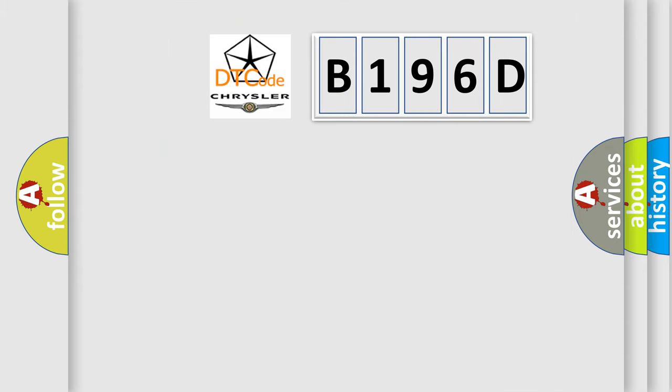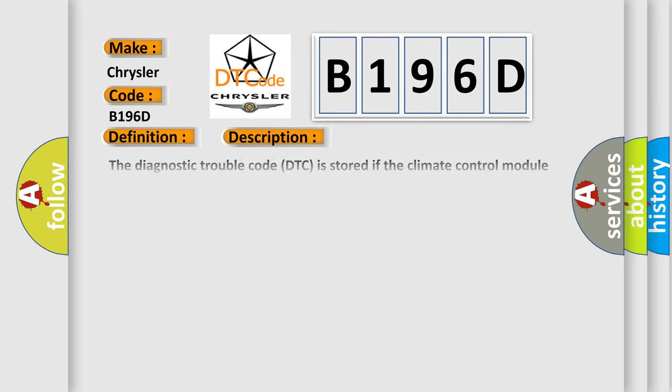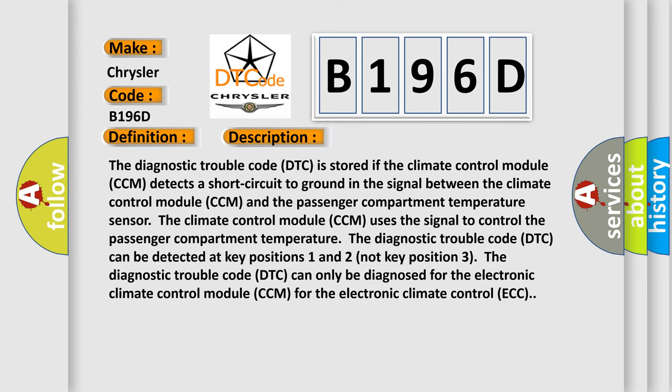So, what does the diagnostic trouble code B196D interpret specifically for Chrysler car manufacturers? The basic definition is: Passenger compartment temperature sensor signal too low. The diagnostic trouble code DTC is stored if the climate control module CCM detects a short circuit to ground in the signal between the climate control module CCM and the passenger compartment temperature sensor. The climate control module CCM uses this signal to control the passenger compartment temperature.